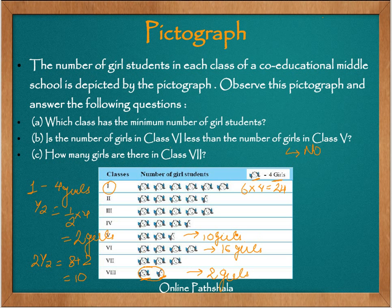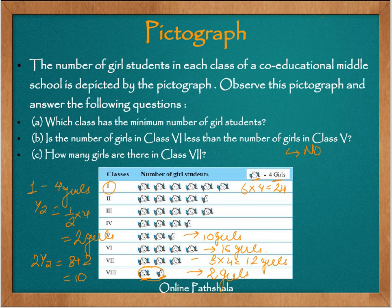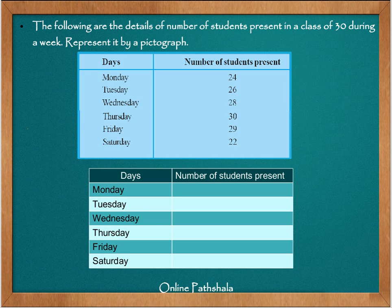How many girls are there in class 7? Counting the pictures: 1, 2, 3. One object represents 4 girls, so 3 multiplied by 4 equals 12 girls. This is how we proceed with these kinds of problems where the number of objects does not have a one-to-one mapping with the items.